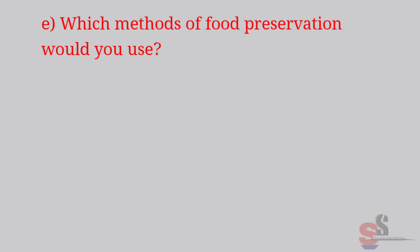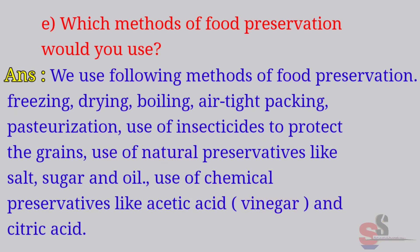E. Which methods of food preservation would you use? Answer: We use the following methods of food preservation: freezing, drying, boiling, airtight packing, pasteurization, use of insecticides to protect the grains, use of natural preservatives like salt, sugar and oil, and use of chemical preservatives like acetic acid (vinegar) and citric acid.